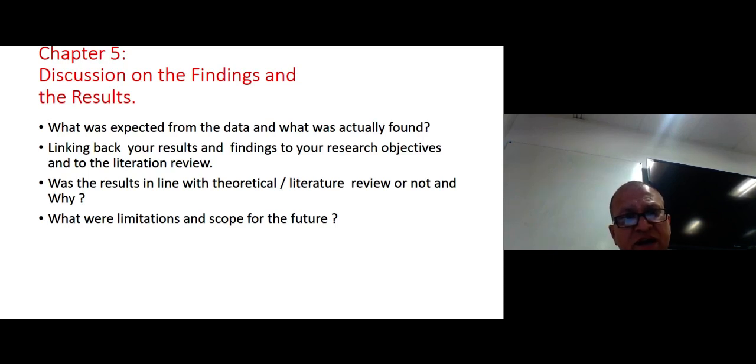So if you have found some results and findings, this means what? What was expected from the data as your objective, and what was actually found? Was it different and why was this different? If it's the same, why is it the same? Linking back your results and findings to your research objectives and also to literature review.